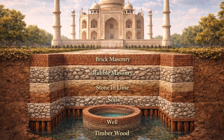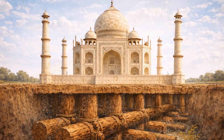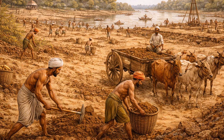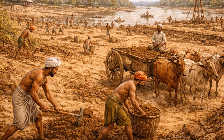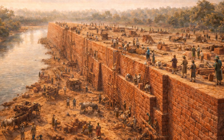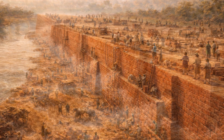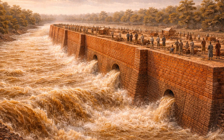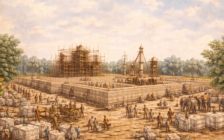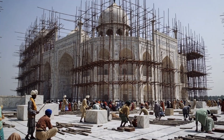Since the Taj Mahal was built near the Yamuna river, timber wood was used in its foundation, as timber becomes stronger in humid conditions, making it suitable for riverbed soil. Before the tomb could rise, the ground had to be prepared, and for this a huge platform was built beside the river. This platform was 300 meters long and almost 9 meters high, protecting the building from floods and weak river soil.